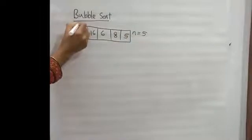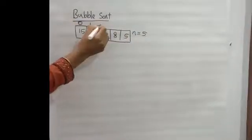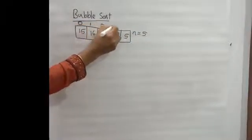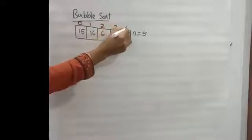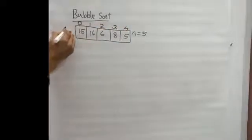Indexes start from 0 to 4: 0, 1, 2, 3, 4. The array name is A.